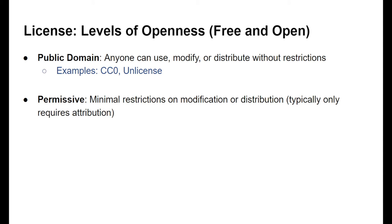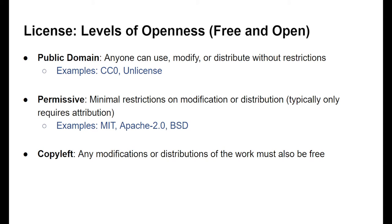Next we have permissive licenses, which usually have minimal restrictions — in most cases requiring only attribution: saying who wrote the code, where it comes from, and what license it's under. The most common examples are the MIT license, Apache 2.0, and BSD (Berkeley Software Distribution License). Getting more restrictive, we have copyleft, where use, modification, and distribution must be free and open, and any project using that work must also be free and open. The most common copyleft licenses are GPL (General Public License) and DSL (Design Science License).